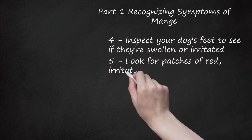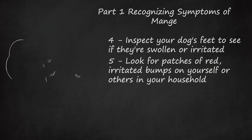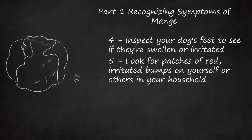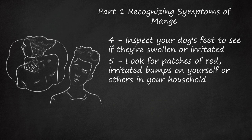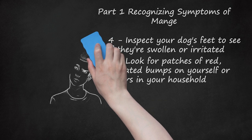Look for patches of red, irritated bumps on yourself or others in your household. One of the ways to detect a case of mange on your dog is to find mite bites on yourself. When the type of mites that cause sarcoptic mange come into contact with a human, they can cause red bumps similar to mosquito bites. Luckily, these almost never become serious. However, seeing these symptoms after being around a dog that can't stop itching itself is a strong indication of sarcoptic mange.